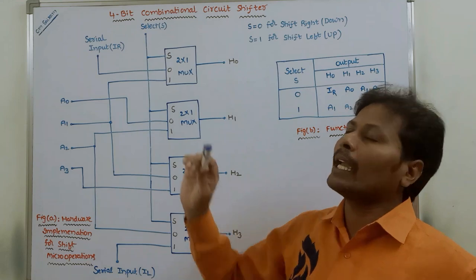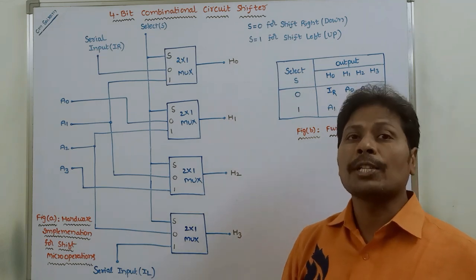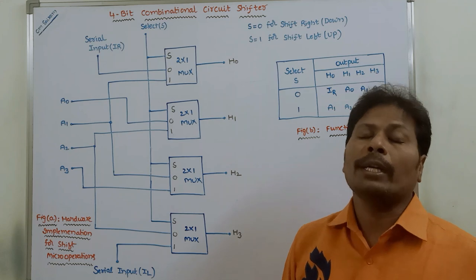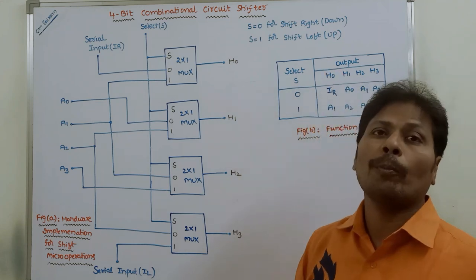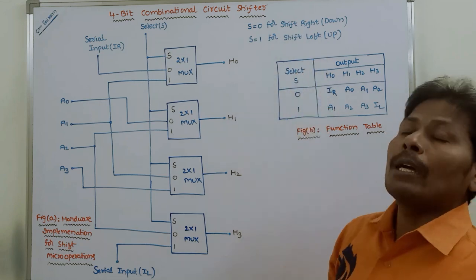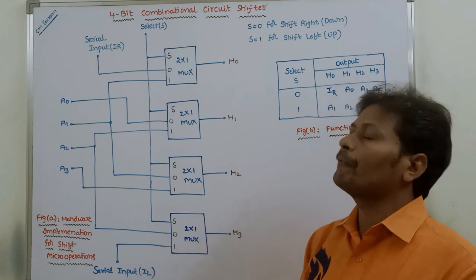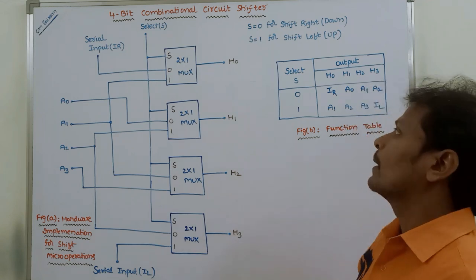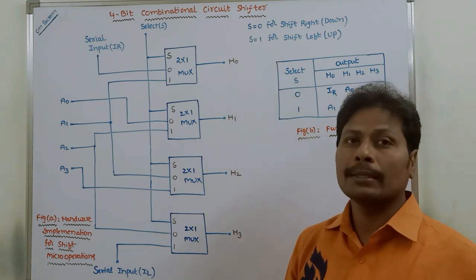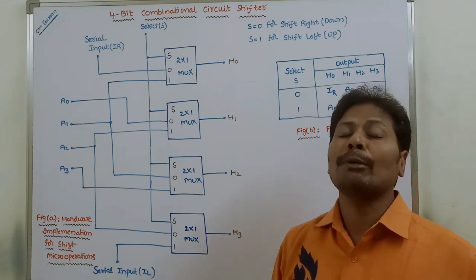The selection input line is denoted by the letter S. If S value is equal to 0, we are performing the shift right operation. The input data bits are shifted towards right one bit at a time. If S value is equal to 1, then we are shifting the input data bits towards left one bit at a time.